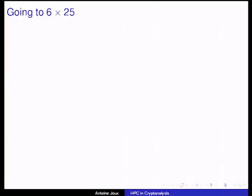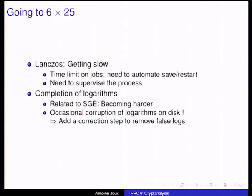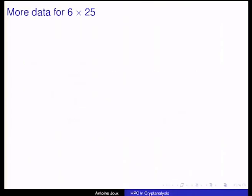The next step, presented by Vanessa this morning, was 6×25. Lanczos was going very slow and hard to split. Completing logarithms was becoming harder. Disk corruption returned — after completing the discrete logarithm computation, most logarithms were correct but a few scattered ones were incorrect. Doing backward Gaussian elimination correction with a few false values leads to no correct result, so we had to add a correction step to remove the incorrect logs — which was a pain.